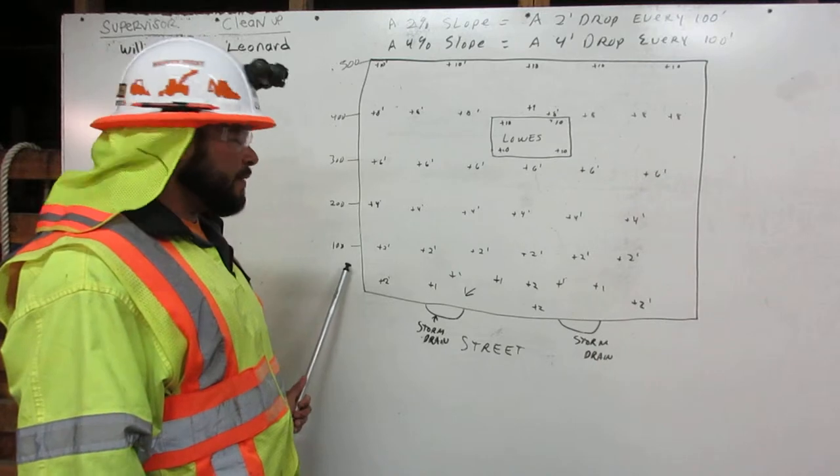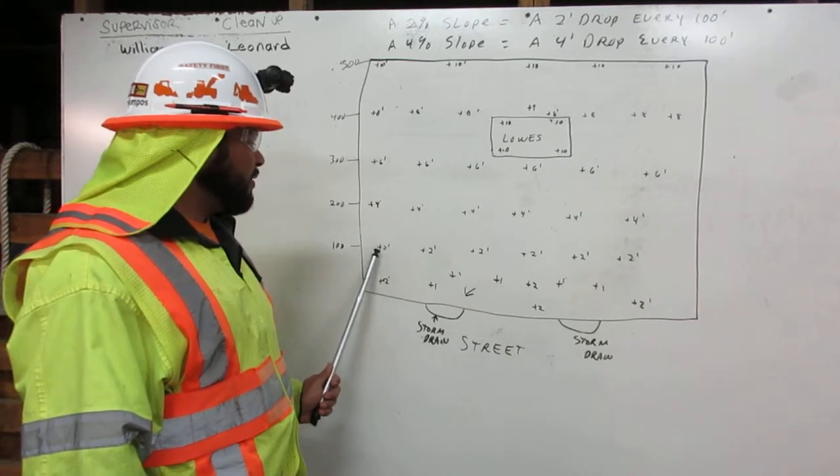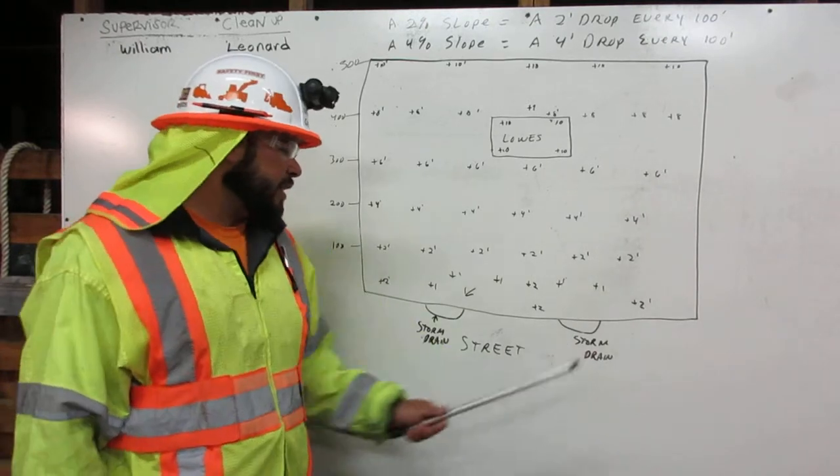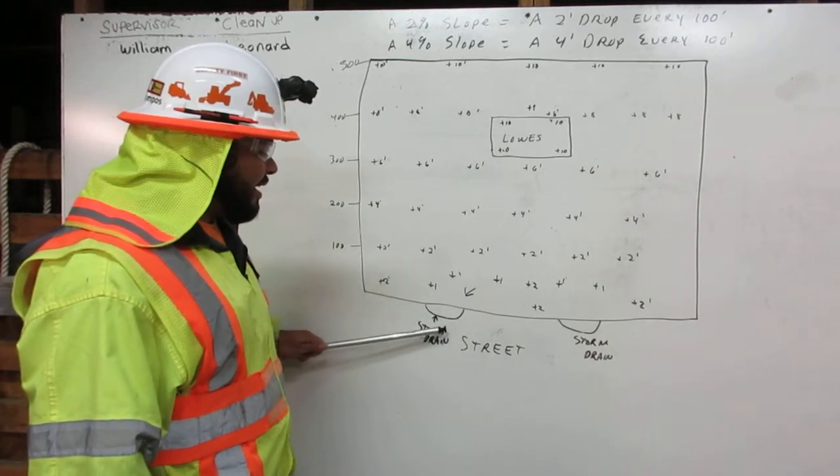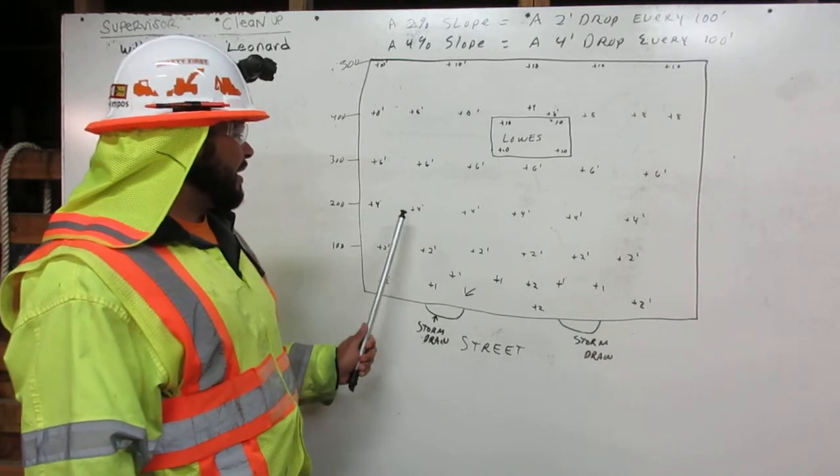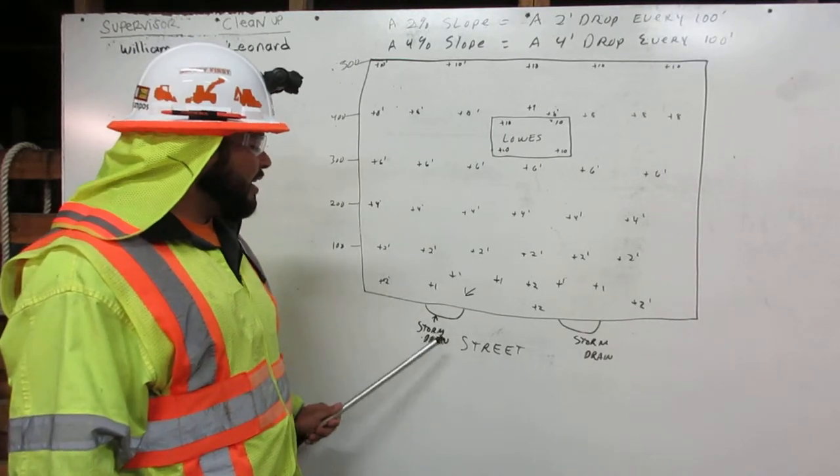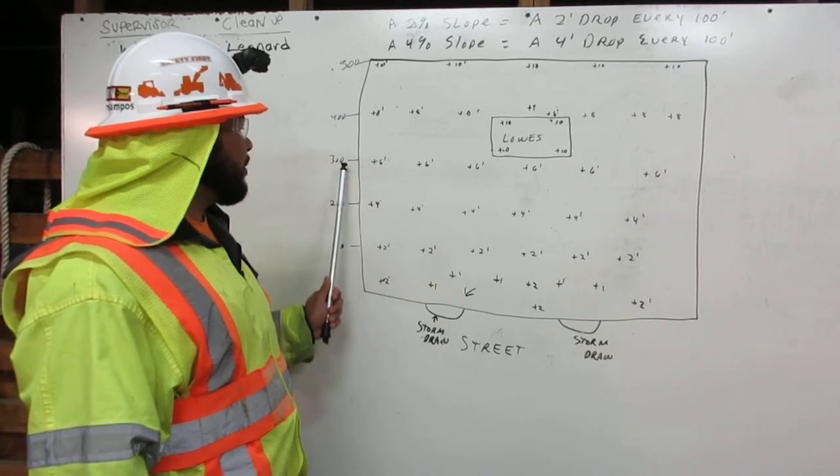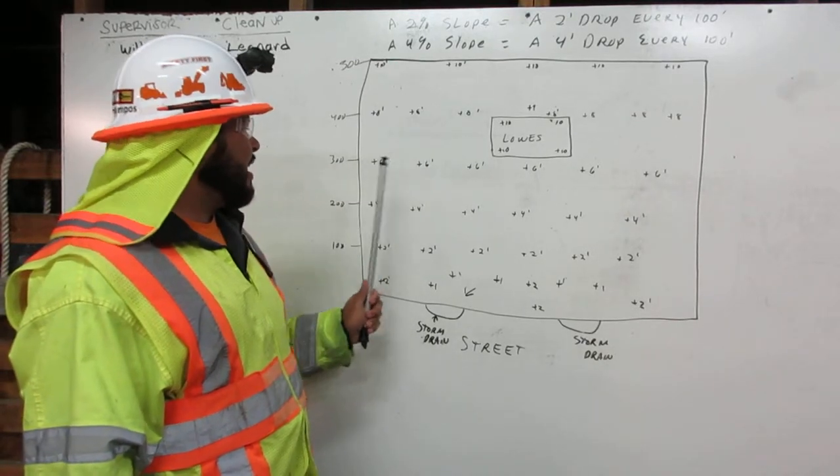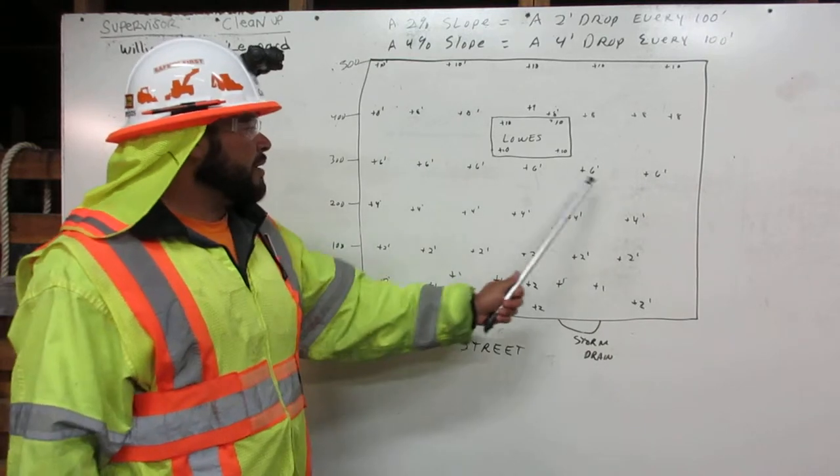At 100 feet we have two foot of elevation so we're going to put dirt all the way across, two feet, and it has to be two foot higher than the storm drain. At 200 feet it has to be four foot higher than the storm drain. At 300 feet it has to be six feet higher than the storm drain all the way across.